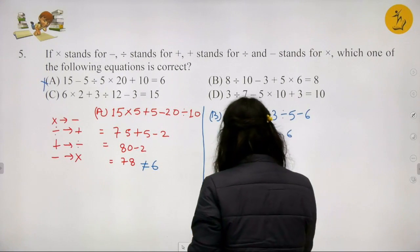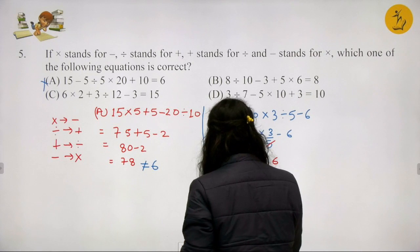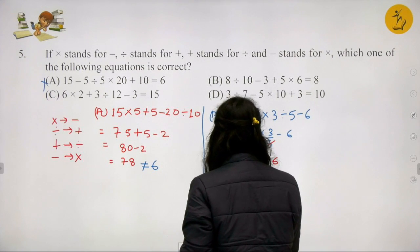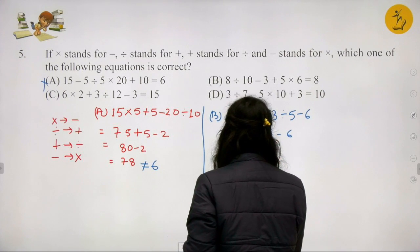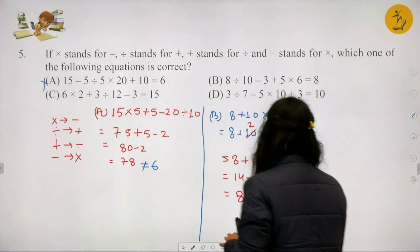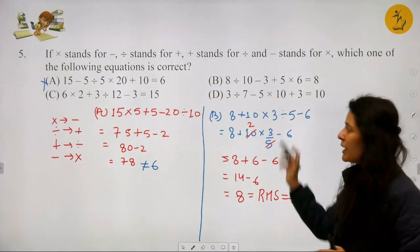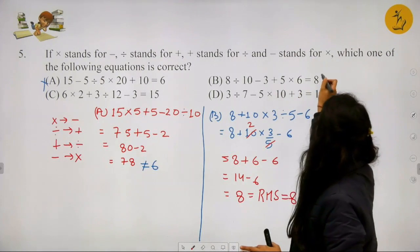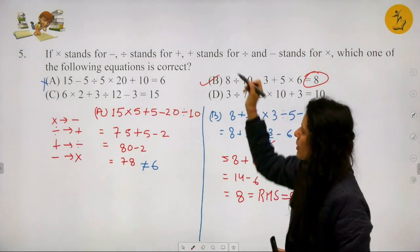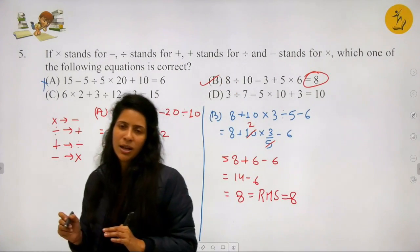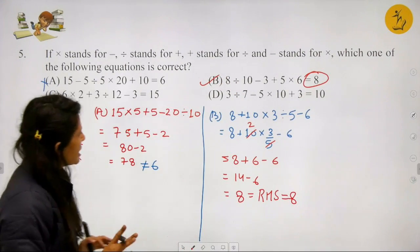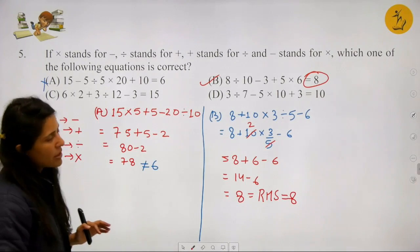Option C is confirmed correct because 5 minus 4 gives 1, and 8 divided by 4 gives 2, then 2 minus 2 gives 0. Since 1 is greater than 0, the statement holds true. Have we understood how to do these questions? Let's move to the next one.